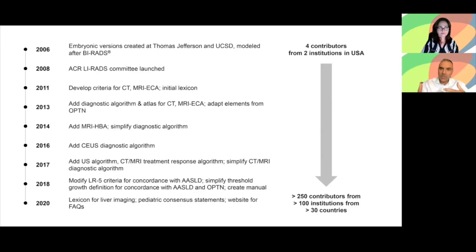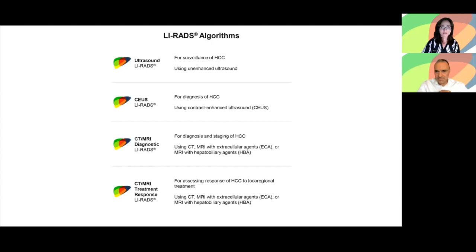So let me tell you where LIRADS is now. If we look at figure two, this is a summary of LIRADS algorithms available in 2020 currently. We cover all kinds of clinical scenarios, including screening and surveillance with ultrasound, diagnosis with CEUS and CT-MRI, as well as treatment response assessment with CT-MRI. All of these algorithms are refined, developed, assessed, and continuously updated by a group of national and international experts in liver imaging — not only radiologists, but also interventional radiologists, hepatologists, and surgeons.